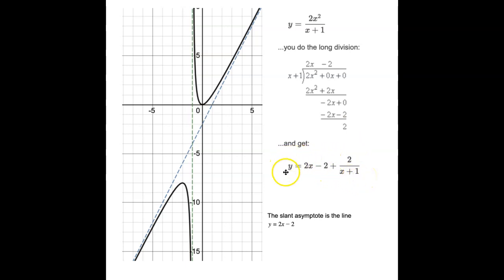And this is going to tell me that I have a slant asymptote here at the line 2x - 2, which is graphed in blue. It's the blue dashed line over here. Also in this function, I'm going to have a vertical asymptote at x = -1, which is shown in green. And then this is how the function interacts with those asymptotes.